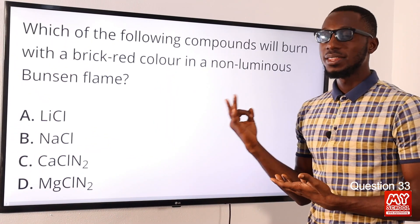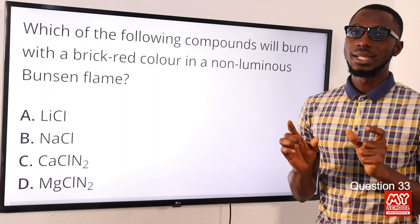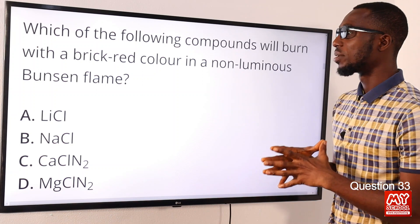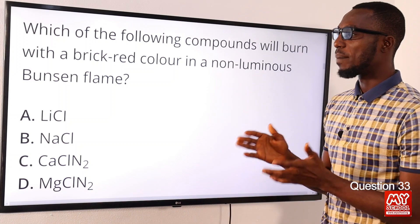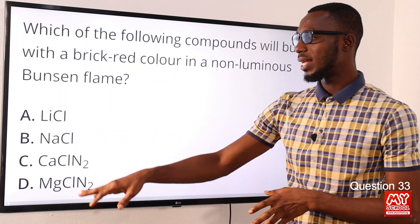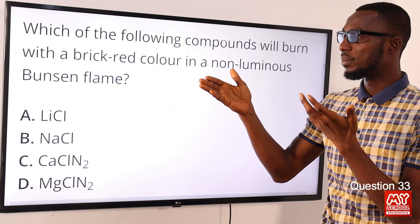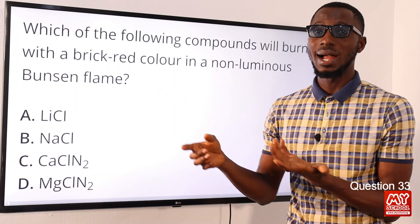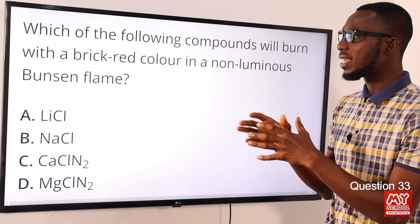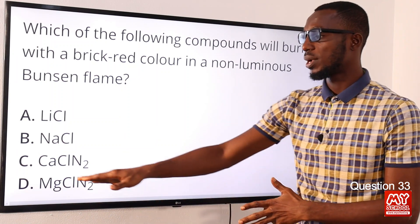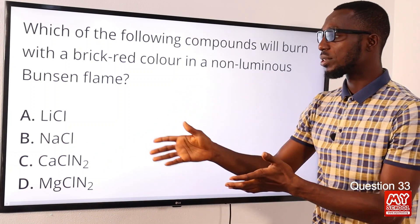Question 33: Which of the following compounds will burn with a brick red color in a non-luminous flame? When you talk about red, you can point to lithium and calcium. Lithium gives crimson red or pink-ish red, but specifically brick red refers to calcium. So the correct option here is option C for the brick red color.